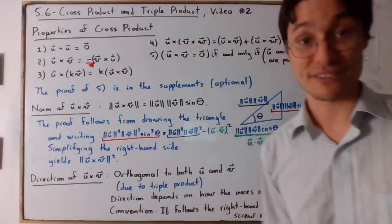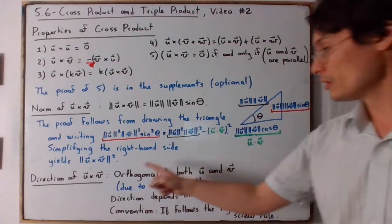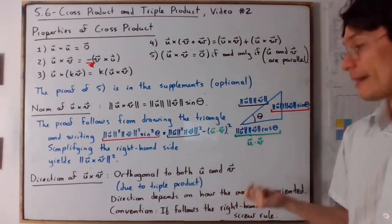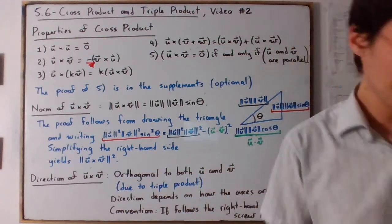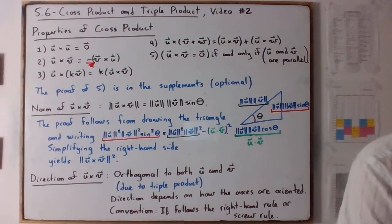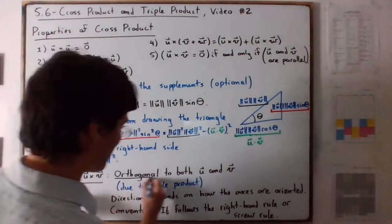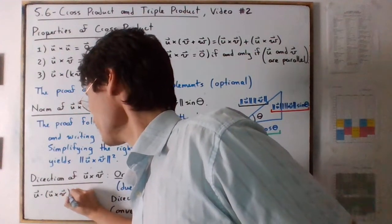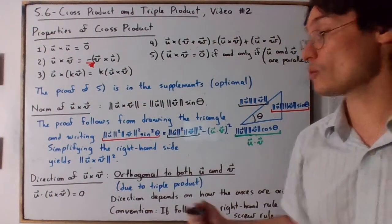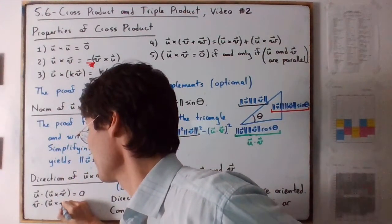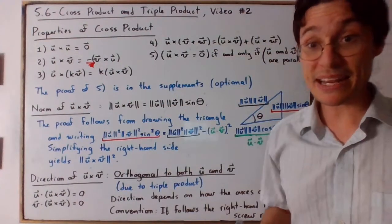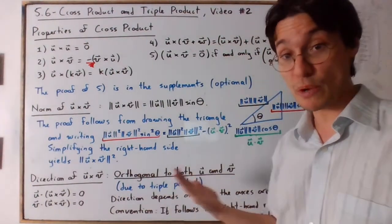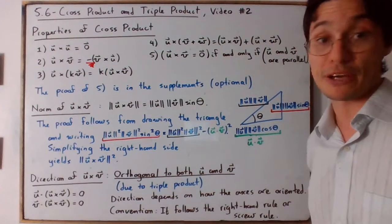Now let's discuss the direction of u cross v, which is quite interesting. It is orthogonal to both u and v — this is due to the triple product. What this means is that if you take the dot product u · (u cross v) you get zero, and likewise v · (u cross v) is also zero. This is a scalar triple product, and we'll prove it when we cover the triple product in the next video.